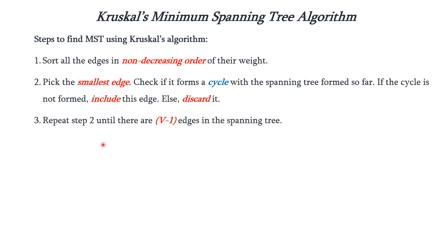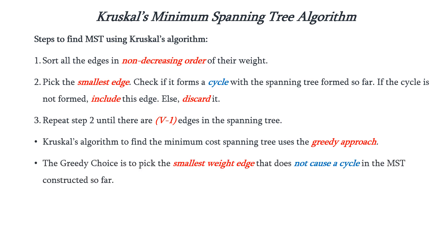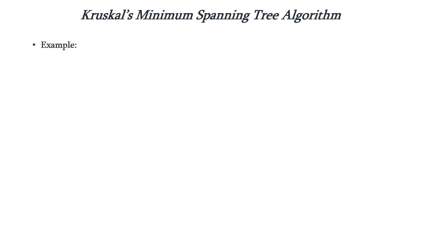We have to repeat step 2 until there are V-1 edges in the spanning tree, because our final spanning tree should have V-1 edges. So these are the 3 steps to find the MST using Kruskal's algorithm. Kruskal's algorithm basically uses the greedy approach, because it picks the smallest weight edge which will not form any cycle in the MST constructed so far.